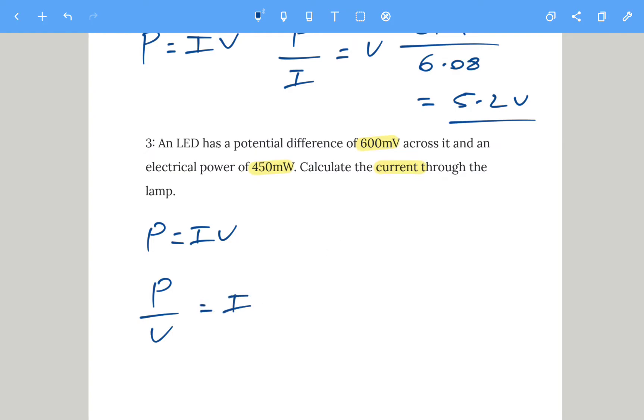We need to do power, which is 450 milliwatts, so you should divide that by 1,000 to give you 0.45 watts, divided by the voltage of 600 millivolts. Divide that by 1,000 gives you 0.6. If you calculate that, you should get 0.75 amps.